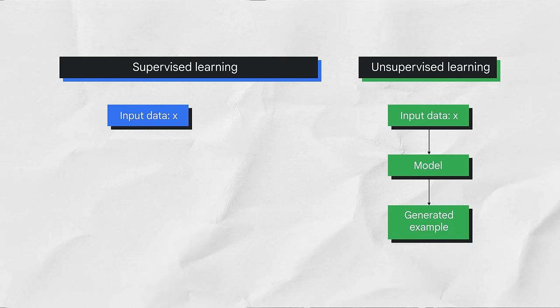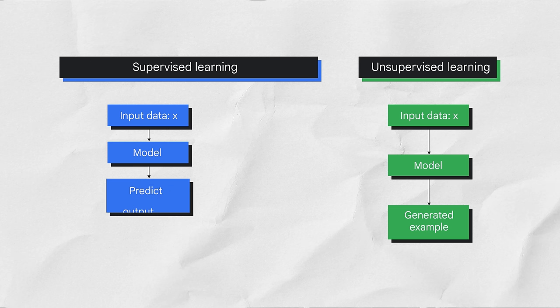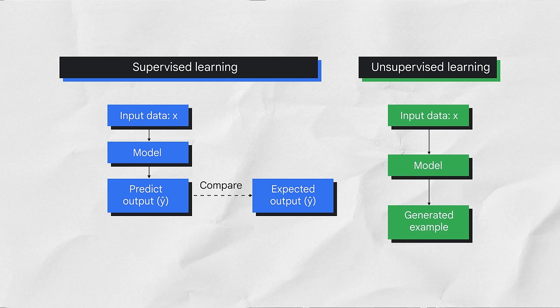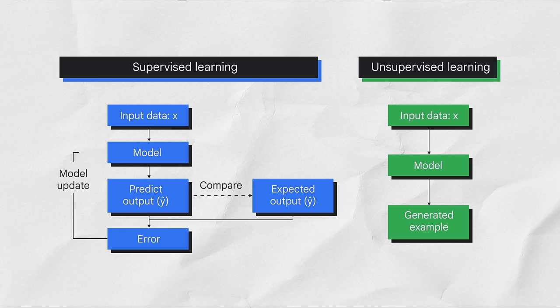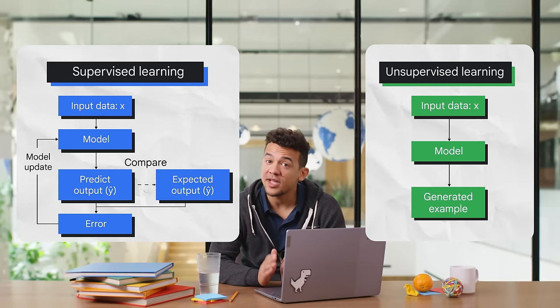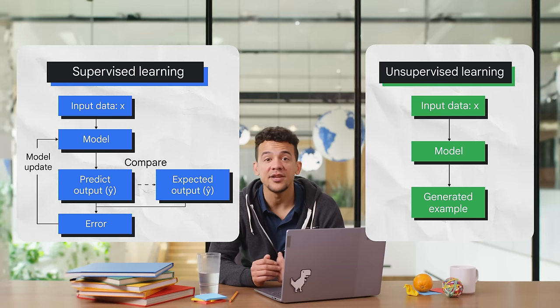This is a good start, but let's go a little deeper to show this difference graphically, because understanding these concepts is the foundation for your understanding of generative AI. In supervised learning, testing data values X are input into the model. The model outputs a prediction and compares it to the training data used to train the model. If the predicted test data values and actual training data values are far apart, that is called error. The model tries to reduce this error until the predicted and actual values are closer together. This is a classic optimization problem. So far, we've explored differences between artificial intelligence and machine learning, and supervised and unsupervised learning.